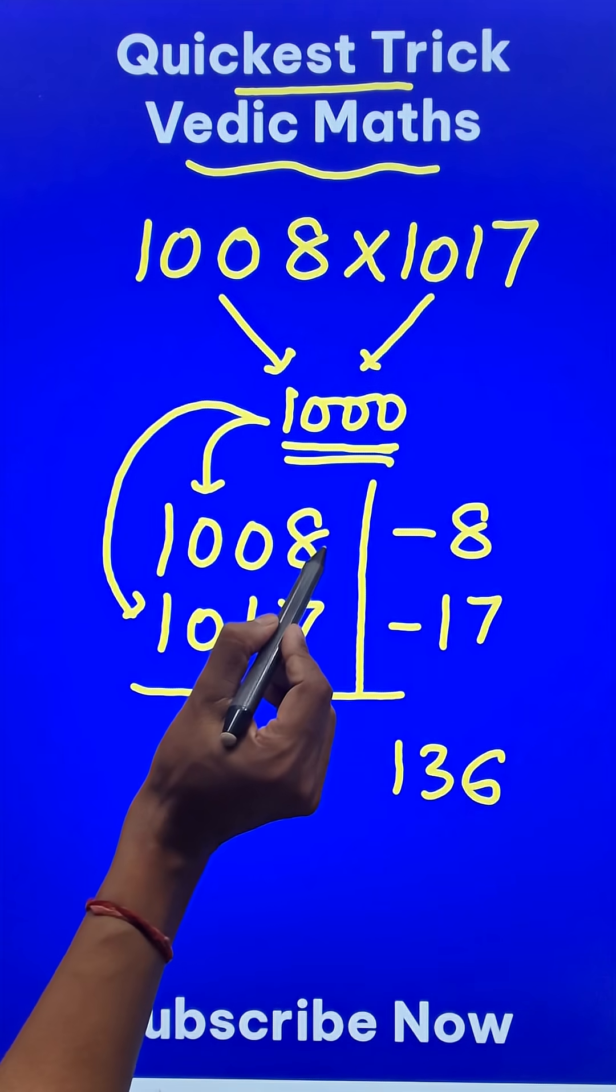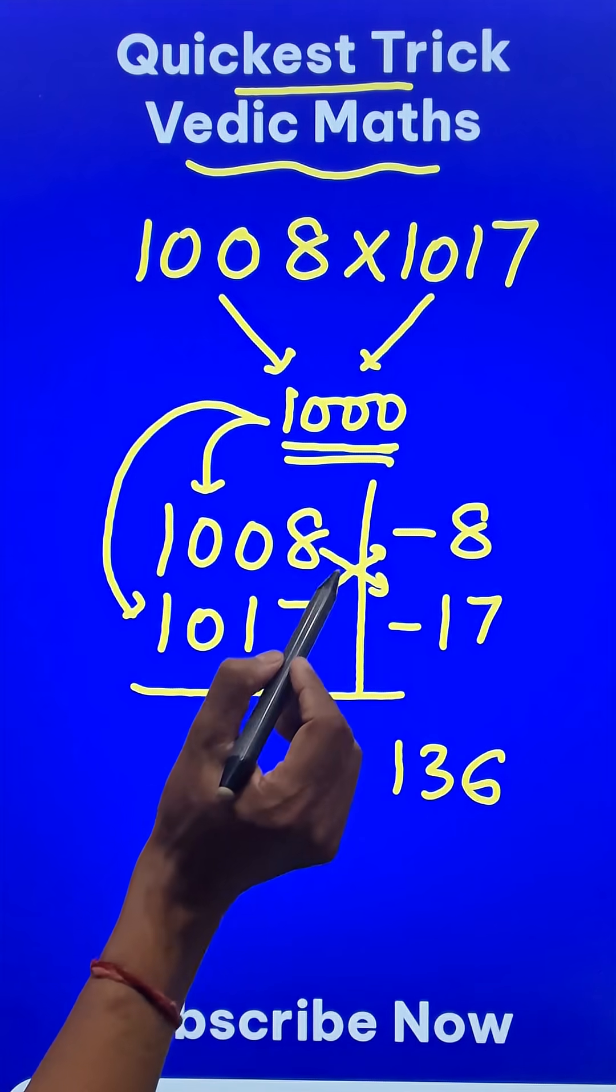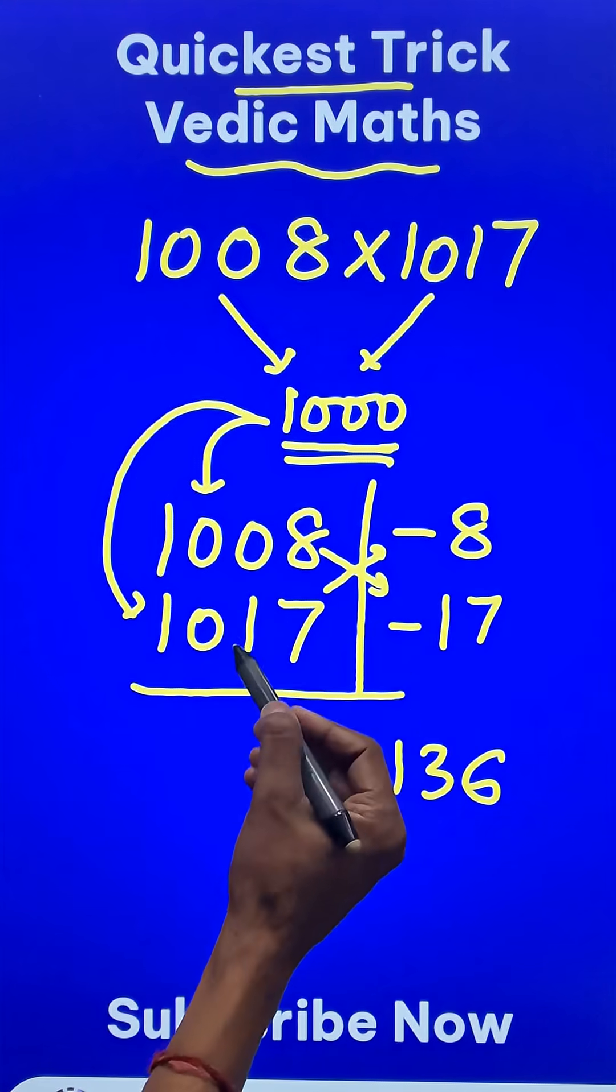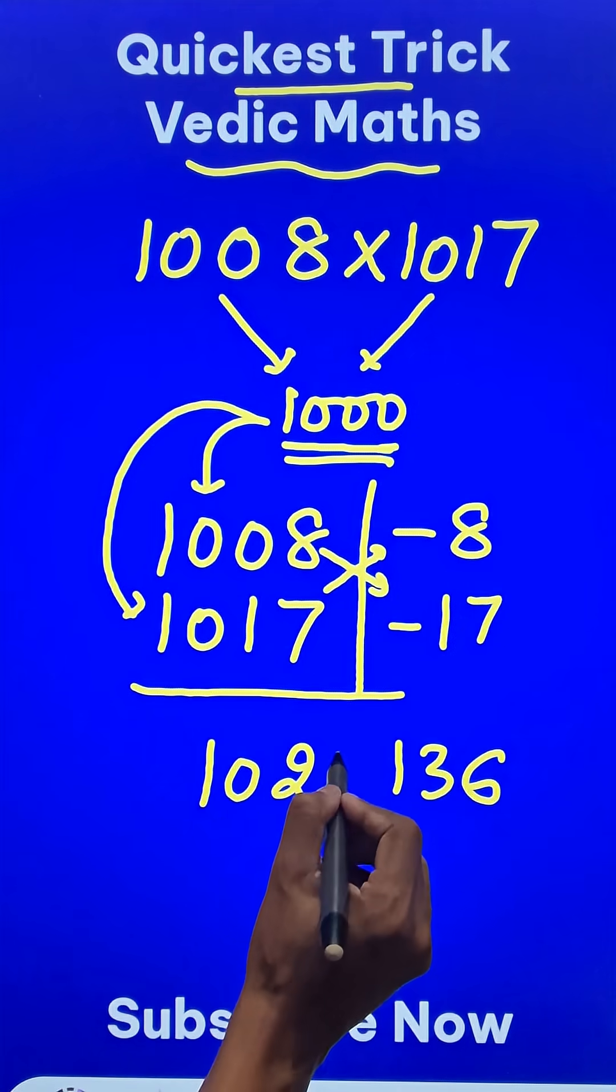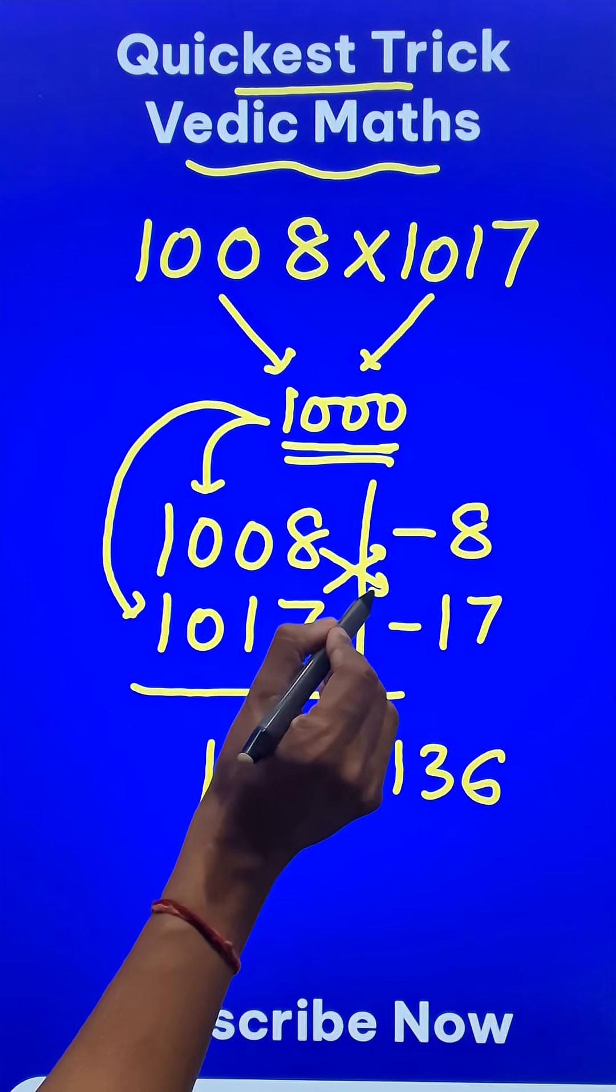Now just subtract like this or subtract like this. When you subtract 1017 and negative 8 they get added, so 1025 is the result. The same result you will get when you go the other way across.